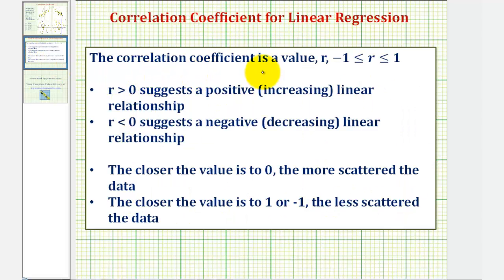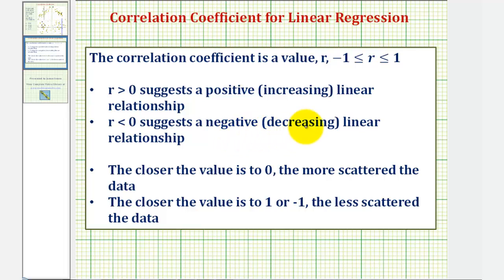The correlation coefficient is a value r somewhere in the closed interval from negative one to positive one. If r is positive or greater than zero, this suggests a positive, increasing linear relationship. If r is negative or less than zero, this suggests a negative or decreasing linear relationship. The closer the value is to zero, the more scattered the data, and the closer the value is to one or negative one, the less scattered the data.